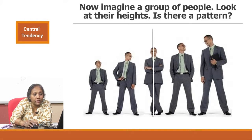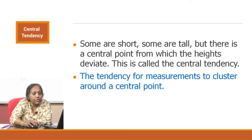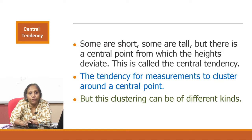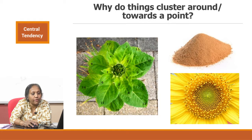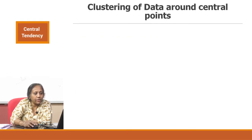The data points are clustering around a certain central point. This concept is defined as central tendency — some people are short, some are tall, and there is a central point from which the heights deviate. The tendency for measurements to cluster around a central point is called central tendency. Other examples include leaf arrangements clustered around points, or a pile of sand slowly dropped onto the ground — all those grains cluster around a certain central point. These are all examples of central tendency.